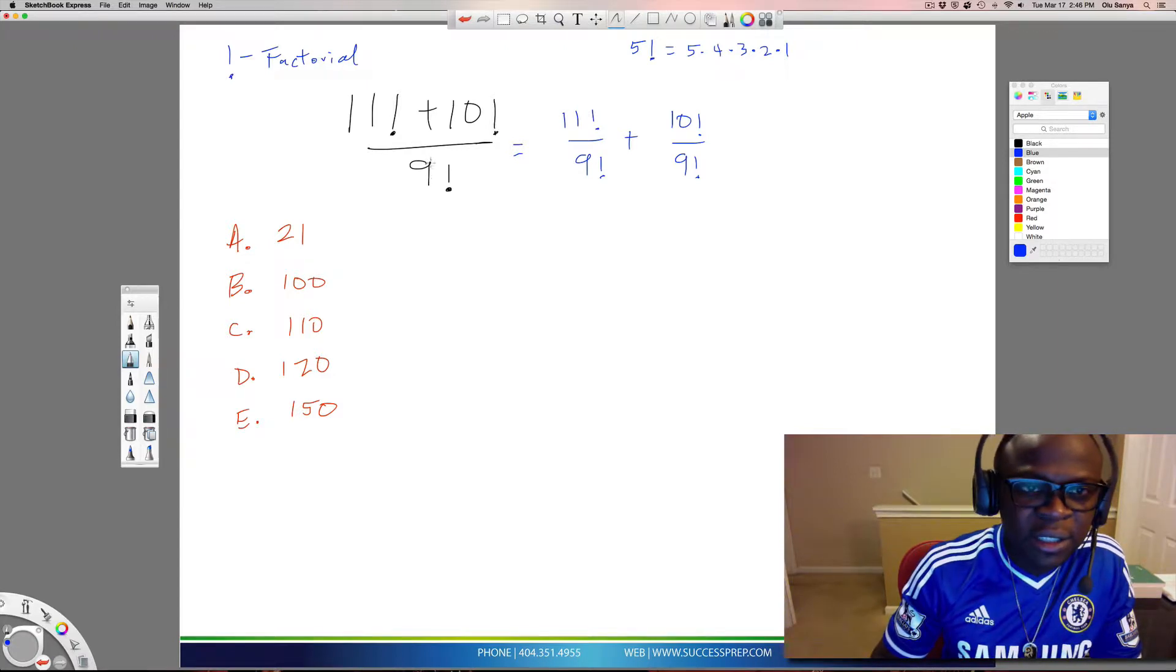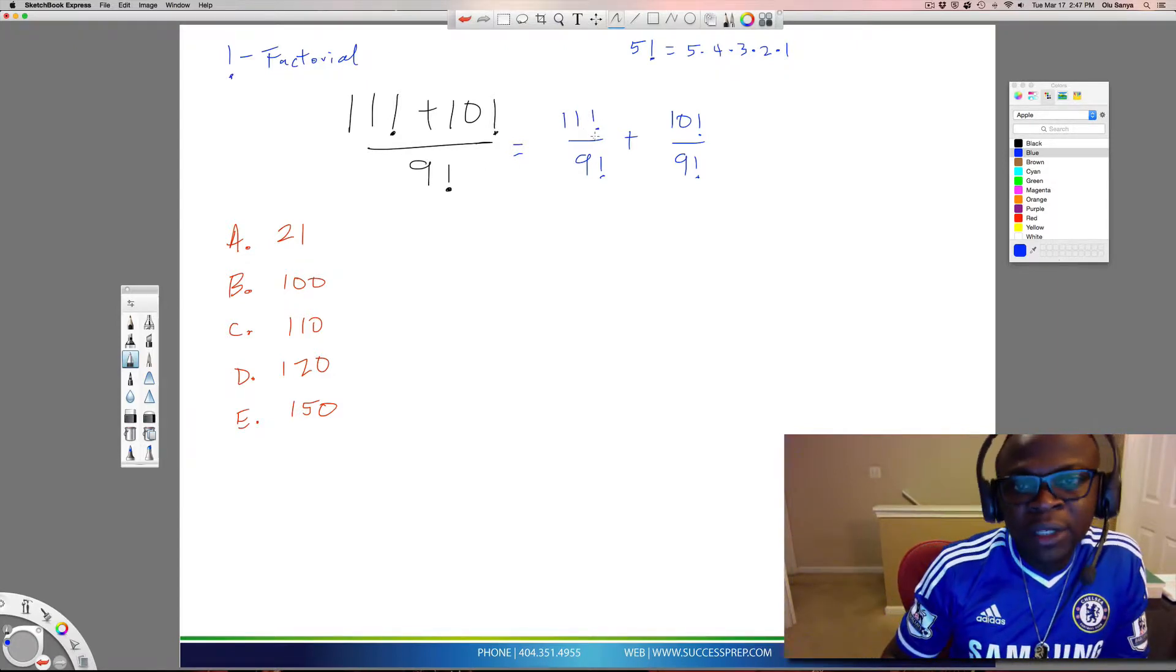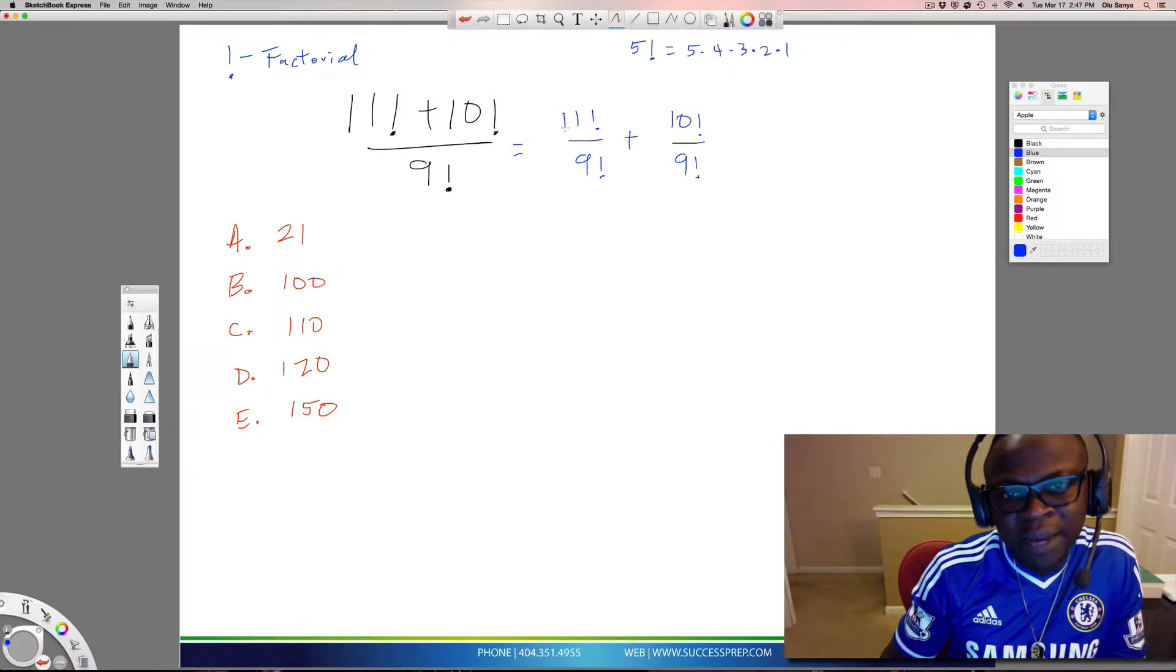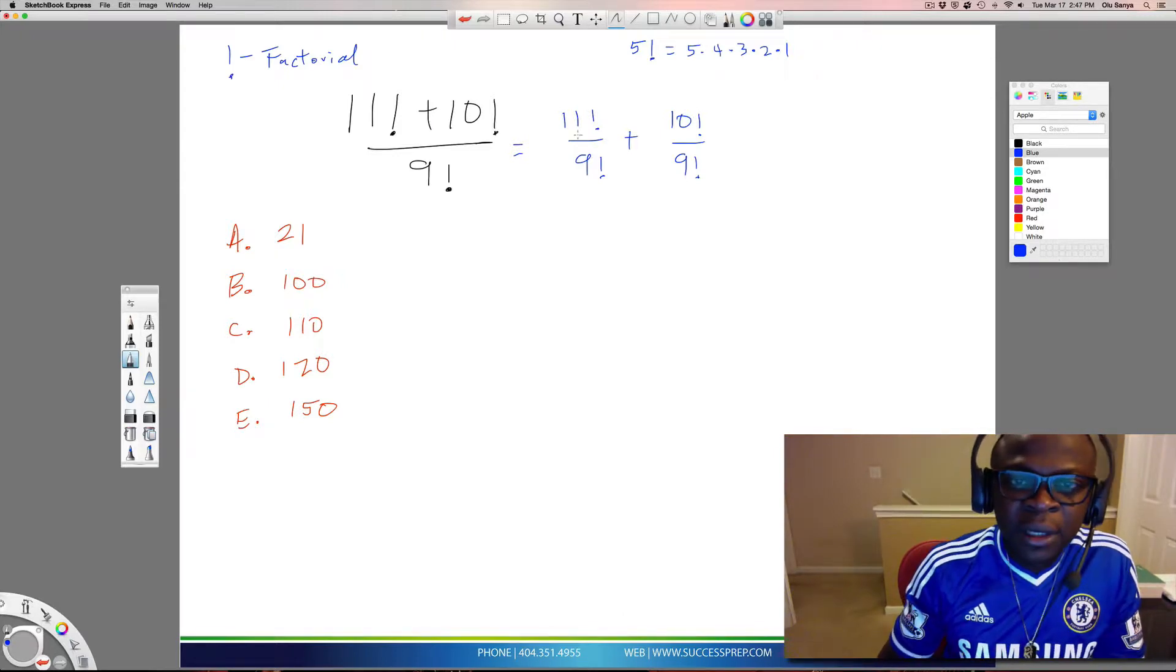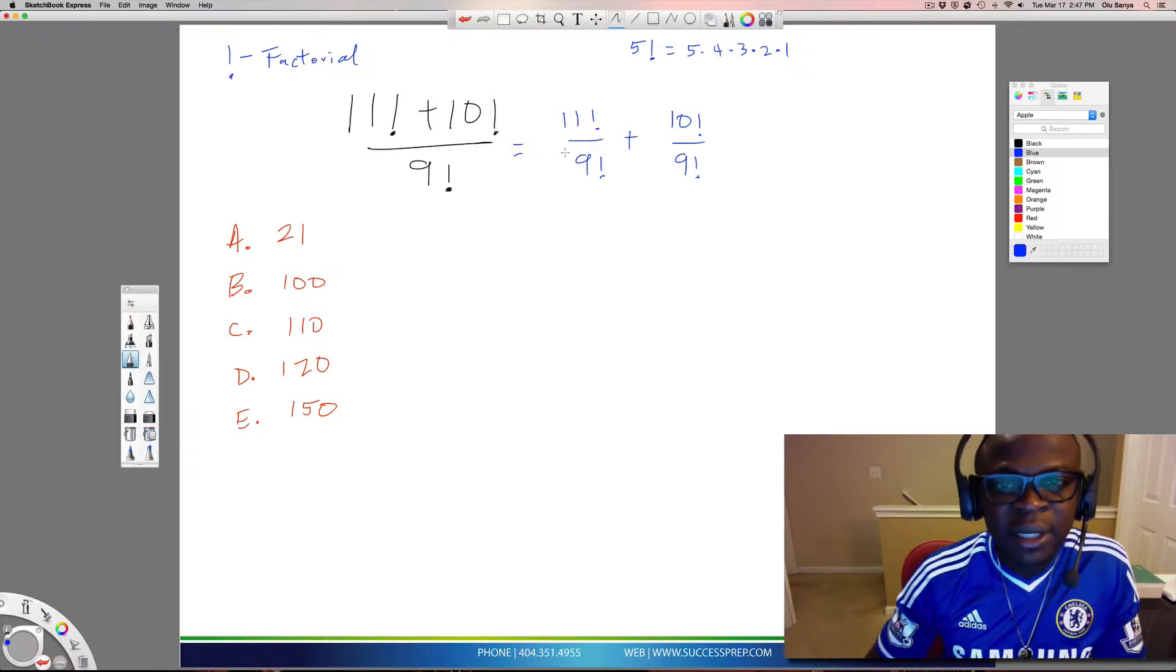This makes it very easy to solve each one. Take this 9 factorial and bring it under the 11 and the 10. Now we can focus on each term separately. Keep in mind that 11 factorial means 11 times 10 times 9 times 8, and so on. On a test like the GMAT and GRE, they don't expect you to actually multiply 11 all the way down to 1.